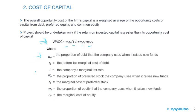WD is the proportion of debt that the company uses when it raises new funds — it's the cost looking forward. RD is the before-tax marginal cost of debt. T is the company's marginal tax rate. WP is the proportion of preferred stock the company uses when it raises new funds, and RP is the marginal cost of preferred stock. WE is the proportion of equity the company uses when it raises new funds, and RE is the marginal cost of equity.